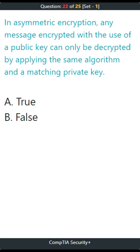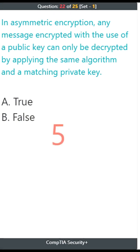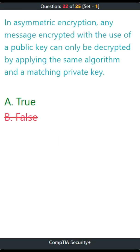Question 22. In asymmetric encryption, any message encrypted with the use of a public key can only be decrypted by applying the same algorithm and a matching private key. A. True, B. False. The correct answer is A. True.